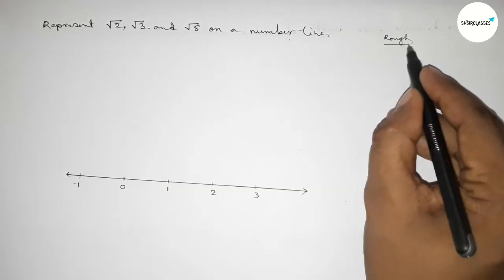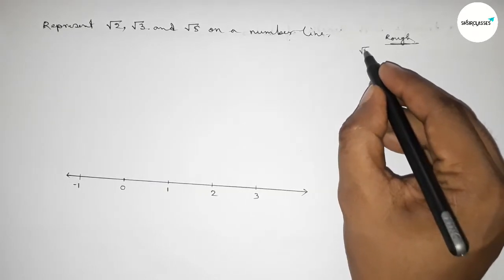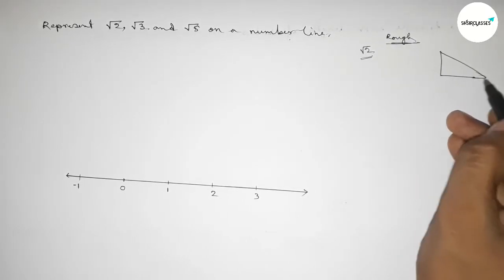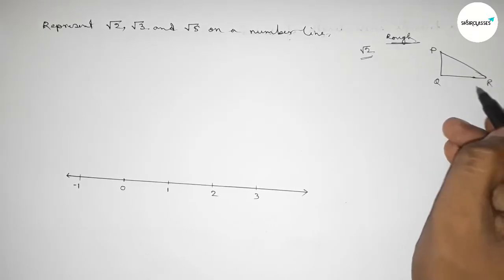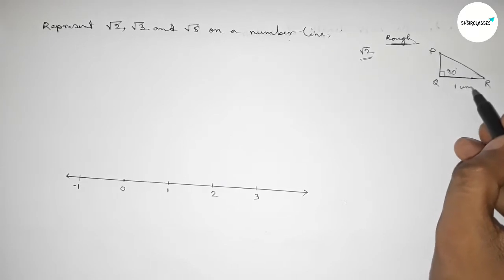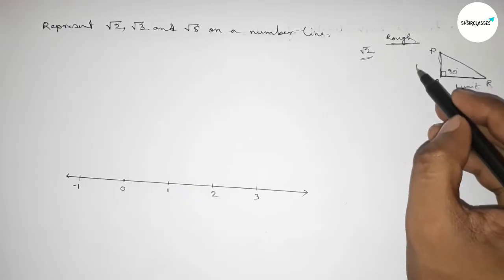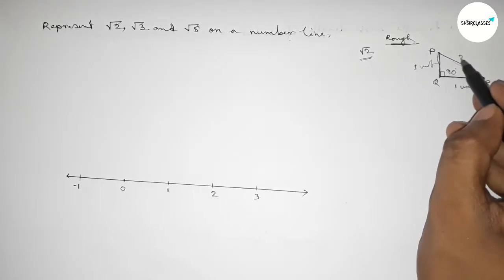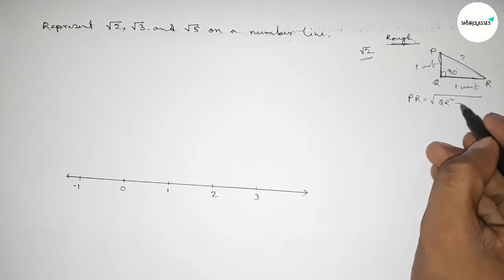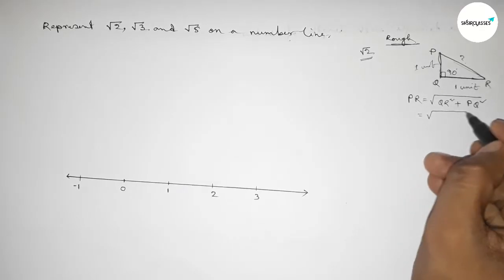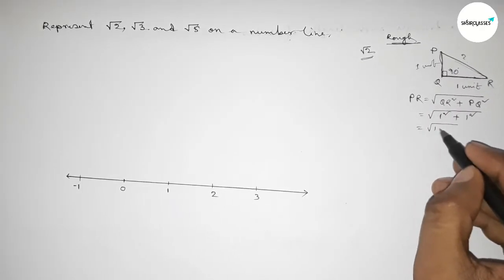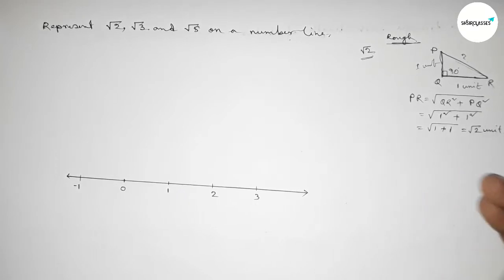First, roughly discussing some back calculation. We have to represent root 2, so drawing a right angle triangle PQR with a 90 degree angle. If we take base QR equal to 1 unit and height PQ equal to 1 unit, then by Pythagoras theorem hypotenuse PR equals root over 1 squared plus 1 squared, which is root over 1 plus 1, so this is root 2 unit.